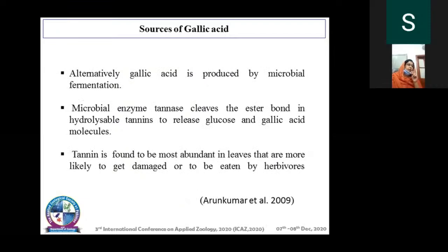The annual demand of gallic acid around the world is approximately 8,000 tons. Conventionally it is produced by chemical hydrolysis of tannic acid, but this process has disadvantages like high cost, low yield, low ability, corrosion of process vessels, and demands more safety precautions due to toxic effluents. Alternatively, gallic acid is produced by microbial fermentation — microorganisms have the enzyme tannase that cleaves the ester bond present in tannin, producing gallic acid and glucose.